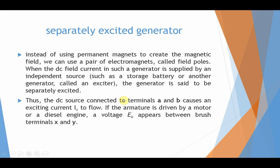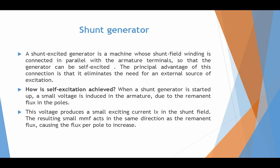The DC source connected to terminals AB causes excitation current IX or IF to flow. As the armature is driven by a motor or diesel engine, the voltage will appear between brush terminals X and Y, as we studied in the basic generator type.